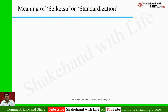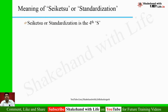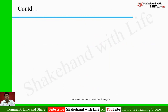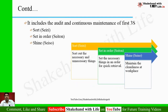Starting with the meaning of Seiketsu or Standardization: Seiketsu is the 4th S among the 5S training series. Standardization includes documented data of everything, supported by the system, and it eliminates the chances of doing a wrong thing — making it impossible to do wrong. It also includes the audit and continuous maintenance of the first three S's.